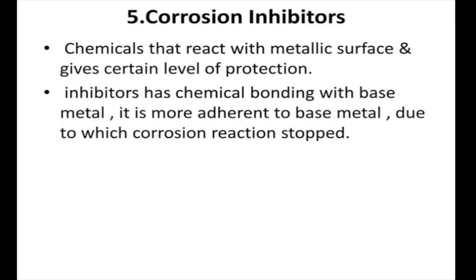The fifth point is corrosion inhibitors. Chemicals that react with a metallic surface and give a certain level of protection are called chemical inhibitors. Inhibitors have chemical bonding with the base metal and are more adherent to it, which stops the corrosion reaction. The presence of inhibitors in a saline, acidic, basic, alkaline, or electrolytic medium — such as salt water — provides excellent results when the right inhibitor is matched to the medium.